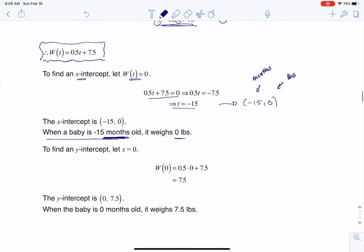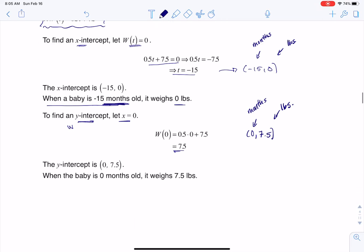So to find a y-intercept, or really a W-intercept, I'm going to let x equal zero. So when I plug zero in, I get 7.5 back out, and we knew that anyways, we were given that. But keep in mind, this is months and this is pounds. So that's why I have here in this sentence, when a baby is 0 months, it weighs 7.5 pounds. Thanks so much everyone, bye!